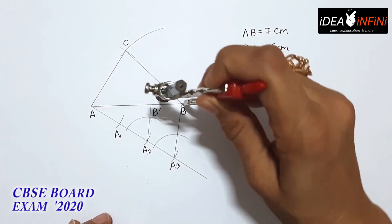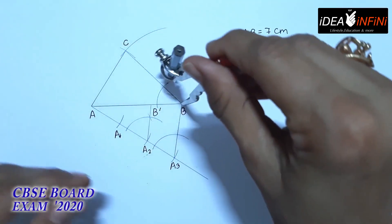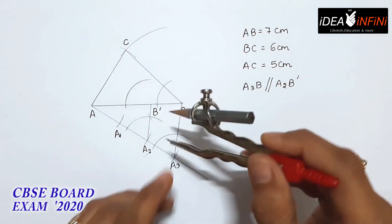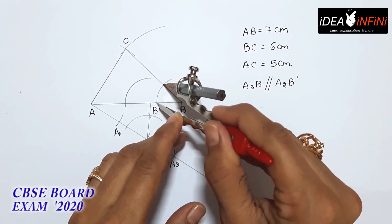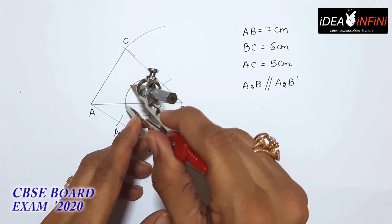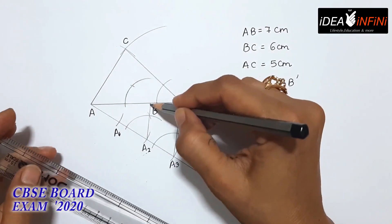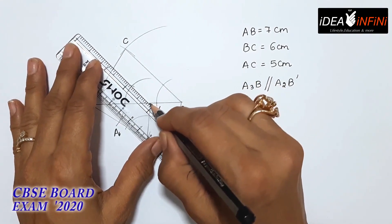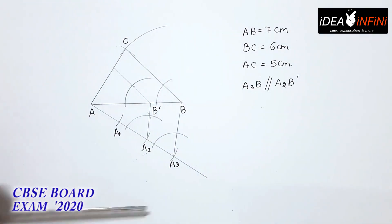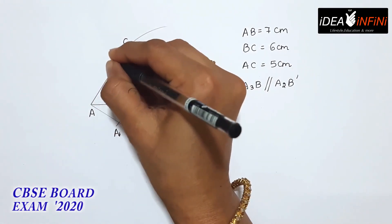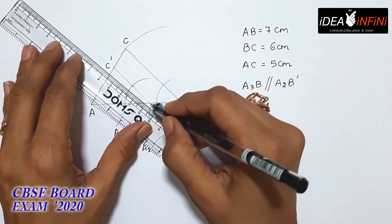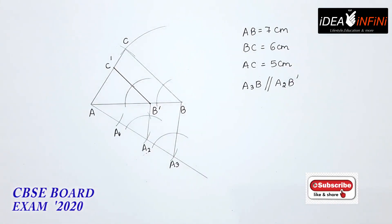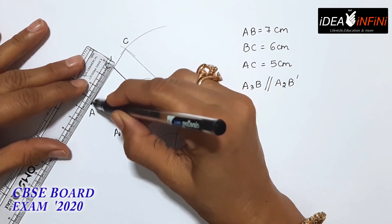अब B से एक छोटा सा arc cut करना है, same radius लेकर B dash से भी arc बनाना है। वो exact distance maintain करते हुए arc से cut करिए। फिर B dash को इस point से जोड़कर extend करेंगे — AC पर cut करते हुए। जब extend किया तो इस point पर cut हुआ — इसका नाम C dash दिया। तो आपका required triangle है B dash, C dash और A।